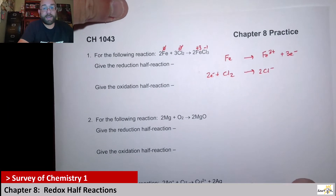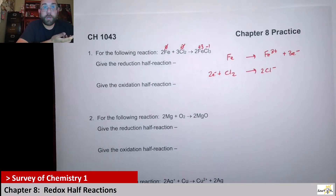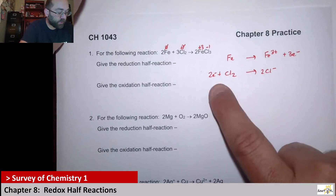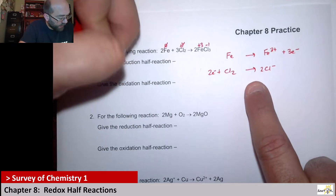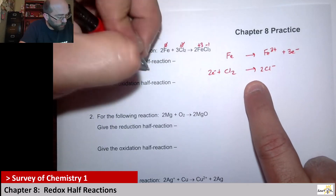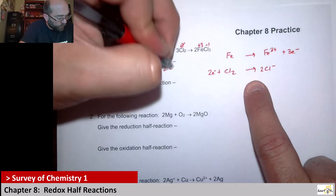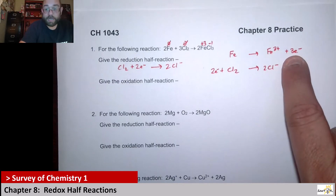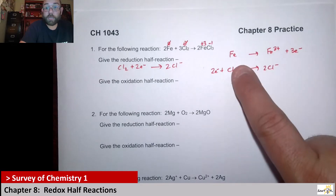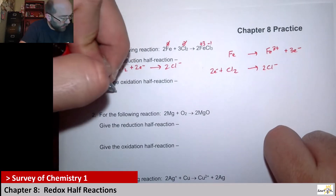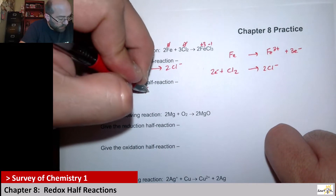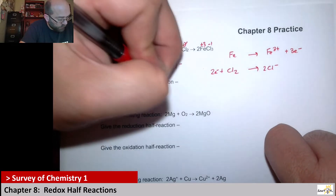So these are the two half reactions. Which one is which? Reduction is gaining electrons. Which one do we see gaining electrons? You go from zero to negative one — that's gaining electrons. So the reduction half reaction for this would be Cl₂ plus two electrons gives me two chloride ions. And that means this one has to be oxidation. Iron zero to iron three plus — it lost electrons. So the oxidation will be Fe gives me Fe³⁺ plus three electrons.